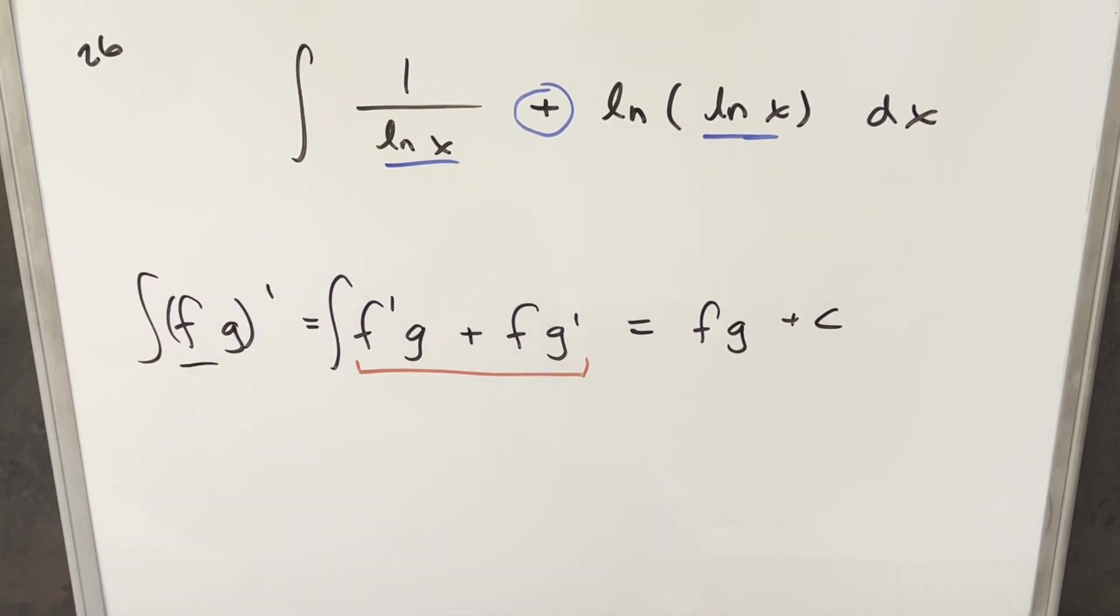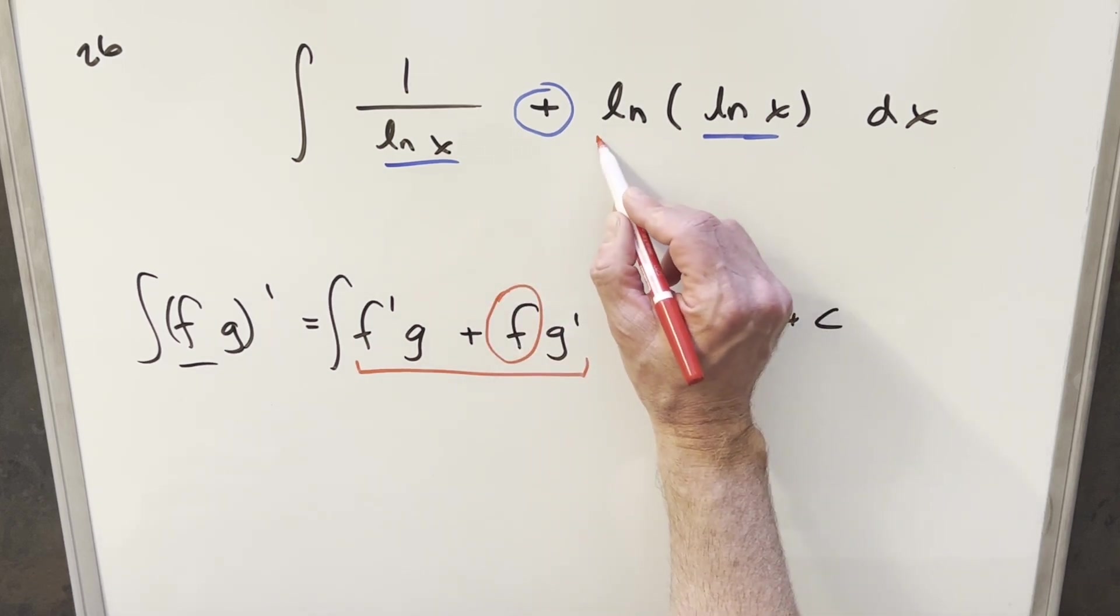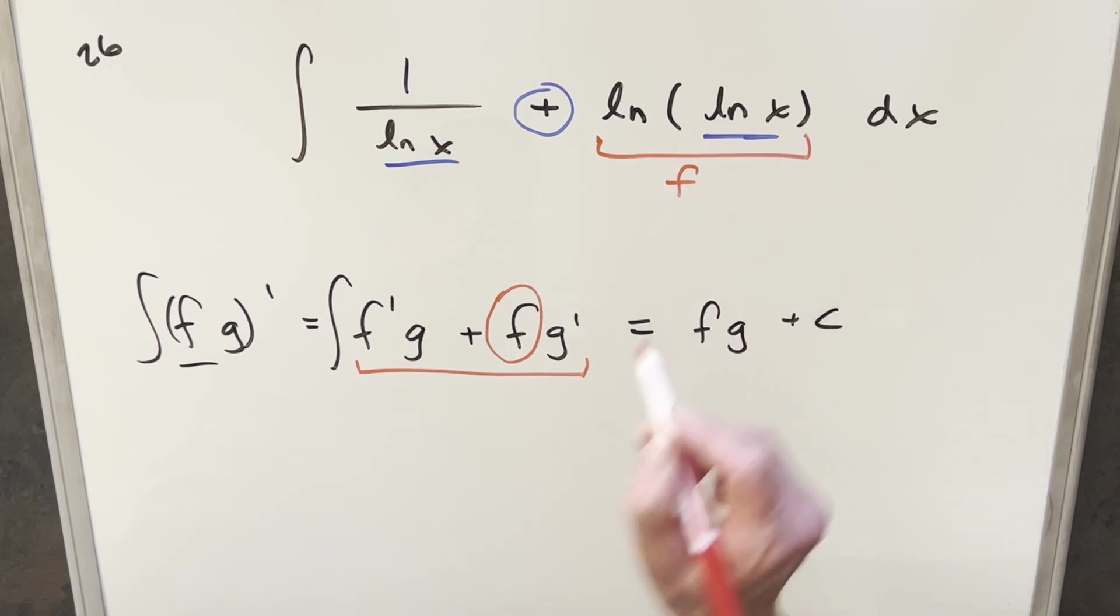Getting back to our integral, we need to know which part is going to be f, which part is going to be g, and how does this all work together. I can try some things and see what works. Looking at this second part, let's call this piece right here f. And if this is f, we're going to want to find an f prime over here.